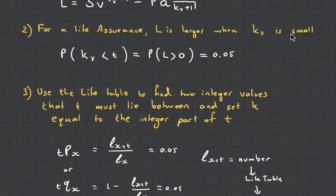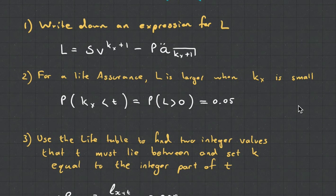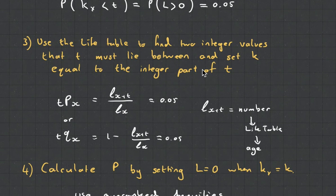For a life assurance, L is large when KX is small. I used a little bit of logic. What I'm saying is that the loss is going to be great if the person dies soon. Why is that going to be? Because it means he hasn't paid a lot of premiums. If he takes out a premium of 10 million and he's paying 1,000 premiums and he dies after one premium, we've lost a big chunk. So L is going to be large when KX is small. Remember, KX is a random variable. And we want it to be less than T so that it's equal to 0.05.